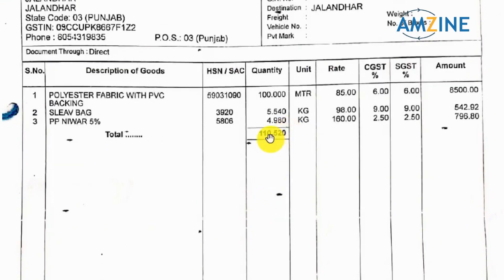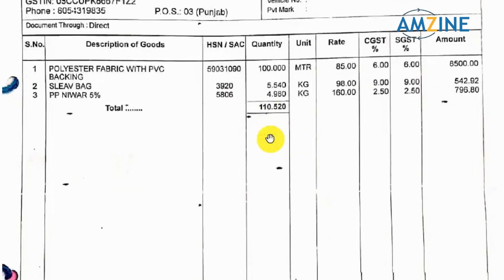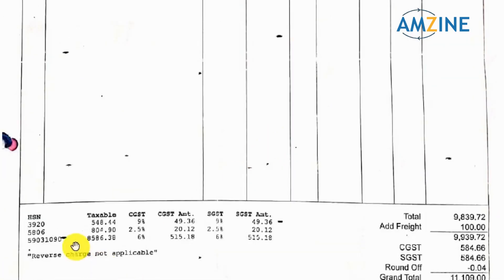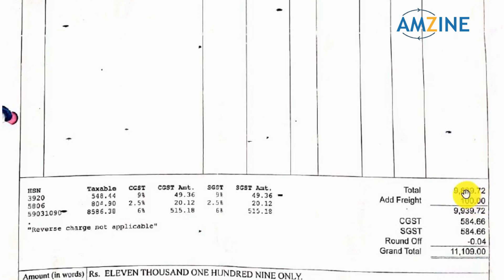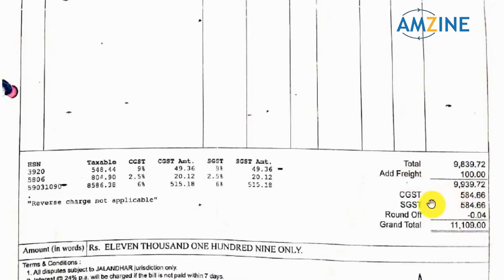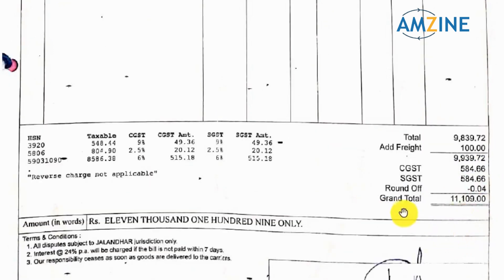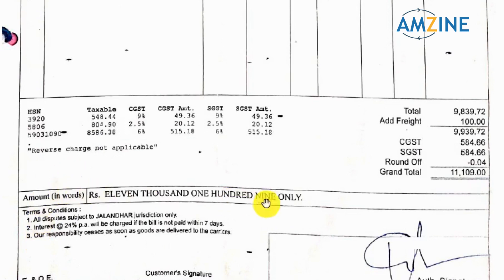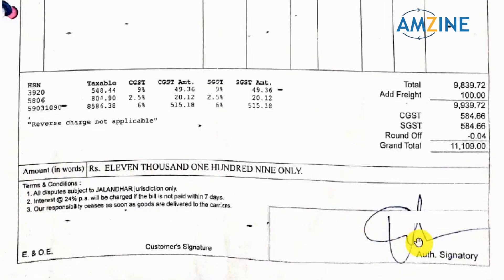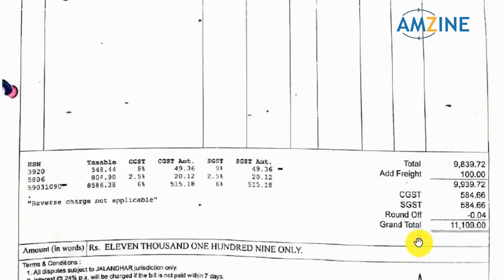After that, we have the total quantity, which shows how much our bill reflects. Going down, we can see the price summary with taxable details — items total before tax. After that, freight charges are added. Then CGST and SGST are applicable. Then round off to the nearest value, and then the grand total. Terms and conditions follow, along with the total amount in words. At last, the authorized signature.